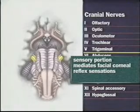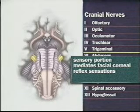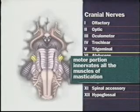The sensory portion of cranial nerve 5, the trigeminal nerve, mediates facial sensation and the sensory part of the corneal reflex. The motor portion of the nerve innervates all the muscles of mastication. To test the nerve's motor function, ask the patient to clench and then relax his jaw while you palpate the temporal muscles and then the masseter muscles. Note the strength of muscle contraction.